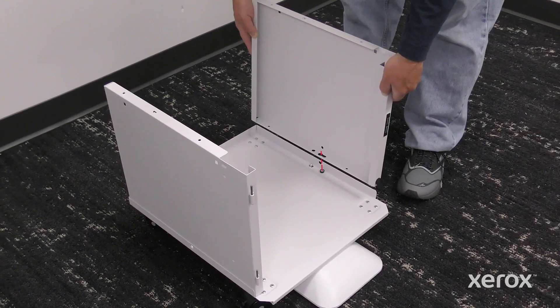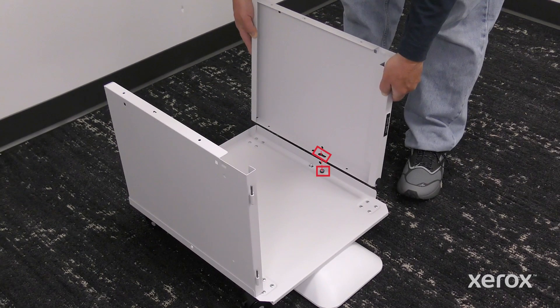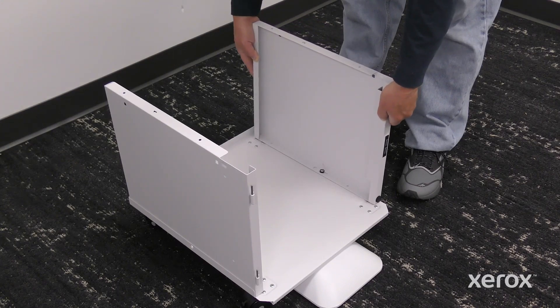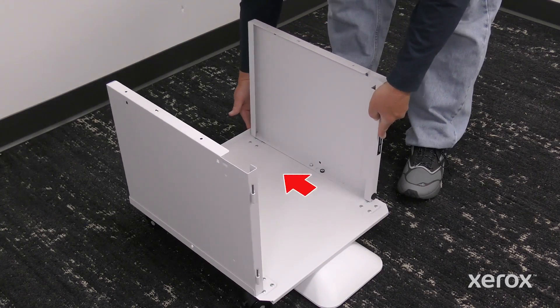To install the right panel, align the large center hole with the post on the stand base. Slide the right panel back, then push until it clicks.